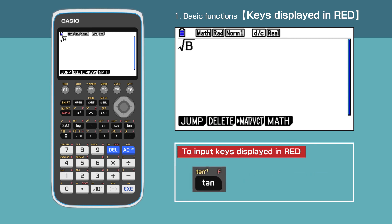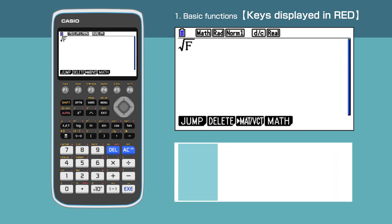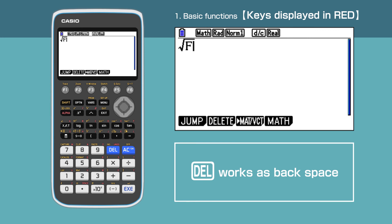Can you display F by yourself? You need to enter Alpha, then tan to get F. The last thing to mention is that the delete button works like backspace. Let's switch off your calculator.